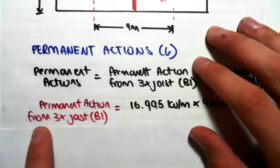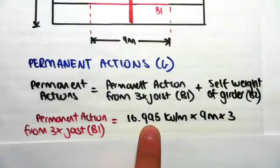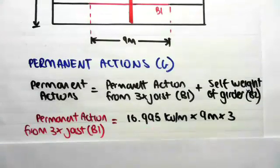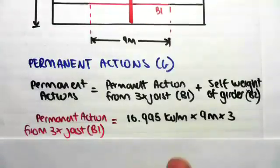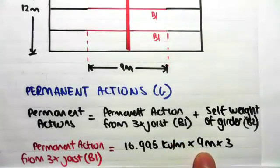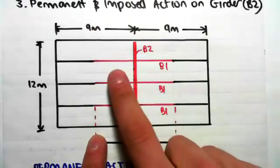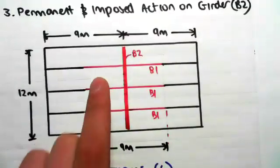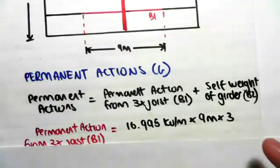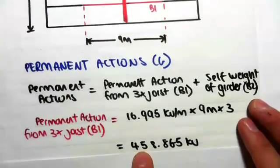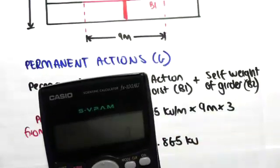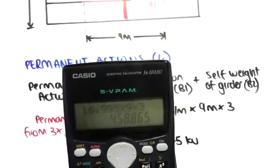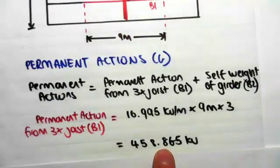The permanent action from the three joists B1: we found in the previous video that the UDL was 16.995 kN/m. We multiply that by the length of the joist — 9 meters — and then multiply by 3 because there are three of them. Kilonewtons per meter times meters gives kilonewtons, so 16.995 × 9 × 3 = 458.865 kN.